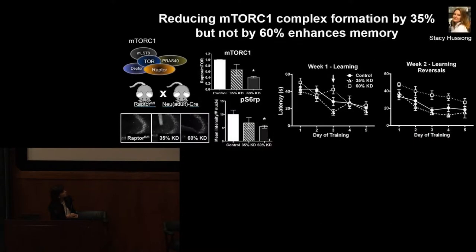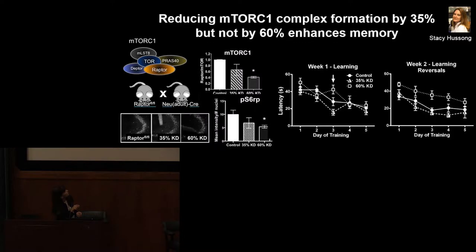This is the work of senior postdoctoral fellow Stacy Husson in my lab. She generated animals with three dosage groups using a floxed raptor allele — raptor being an obligatory component of mTOR complex 1 — allowing 100% complex 1 formation, or a 35% reduction, or a 60% reduction in complex 1 activity.